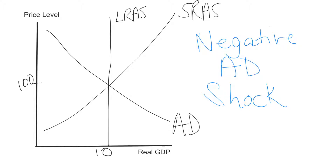This positive aggregate demand shock has no impact on our long-run output — we will still produce the same output, but at a higher price level. This also shows there are actually two kinds of recessions. The normal or typical recession is a negative aggregate demand shock: negative means the curve goes left, aggregate demand is the affected curve, and shock means it shifted.